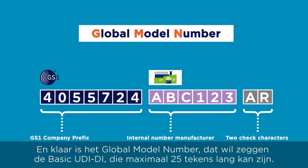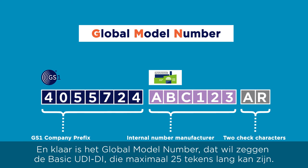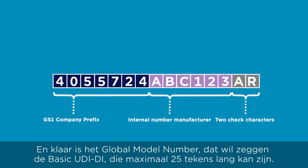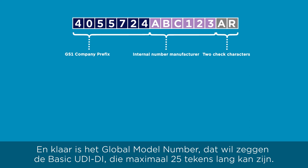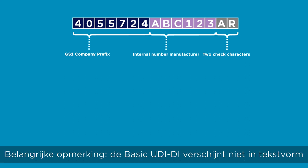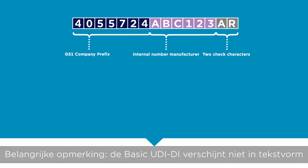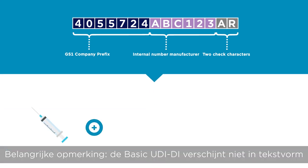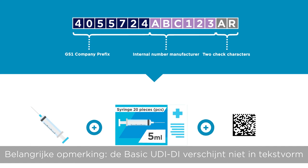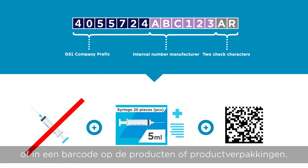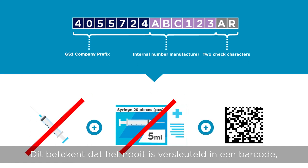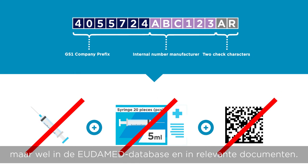The global model number — that is the basic UDI-DI — which can be up to 25 characters long, is ready. Important note: the basic UDI-DI does not appear in text form or in a barcode on the products or product packaging. This means that it has never been encoded in a barcode, but is used in the EUDAMED database and in relevant documents.